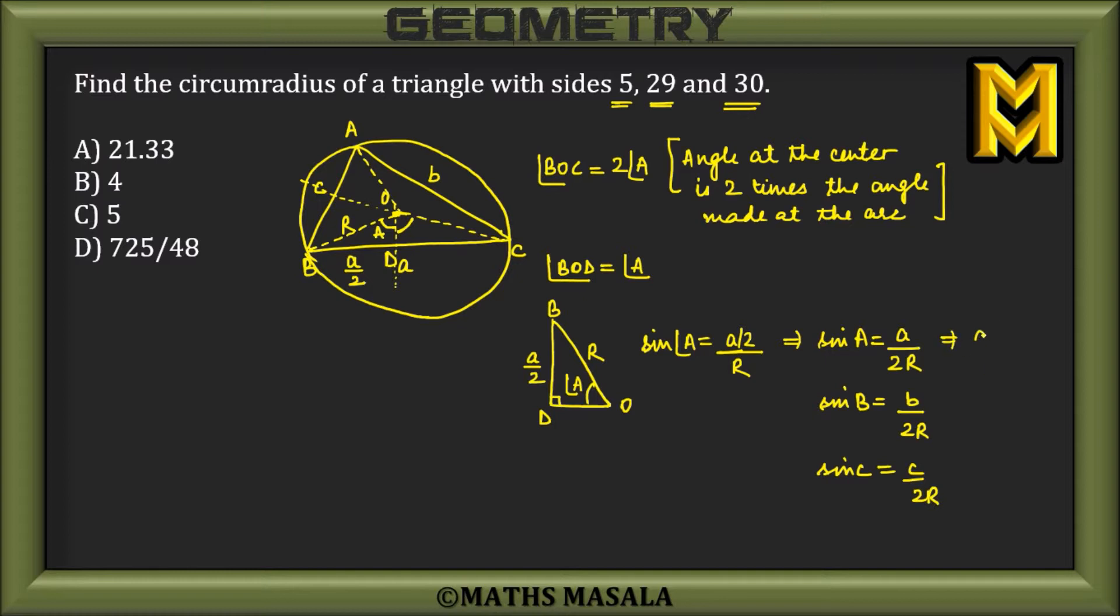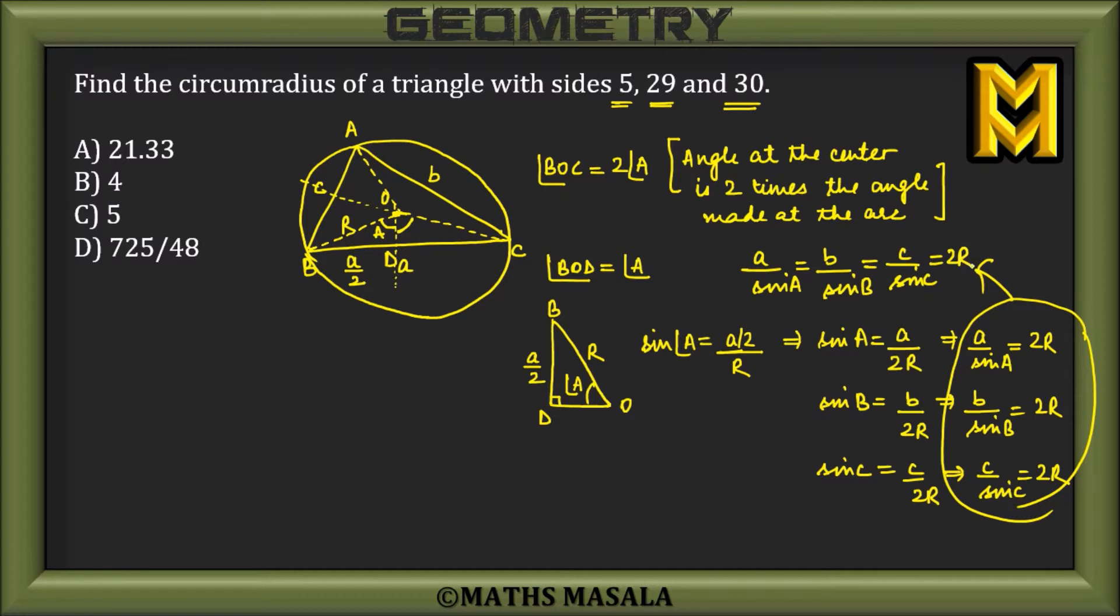Now from this, I can conclude a/sin A would be 2R. From this, b/sin B equals 2R, and from this, c/sin C equals 2R. Combining these three equations, I have a/sin A = b/sin B = c/sin C = 2R.